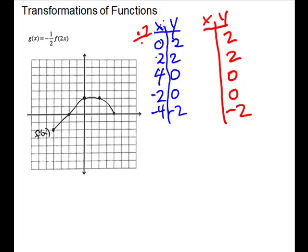My x's are going to divide by 2 because it was multiplied. So you do the reverse. So 0 divided by 2 is still going to be 0. 2 divided by 2 is 1. 4 divided by 2 is 2. Negative 2 divided by 2 is negative 1. And negative 4 divided by 2 is negative 2. So this was my second table.